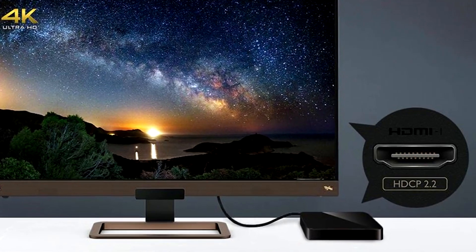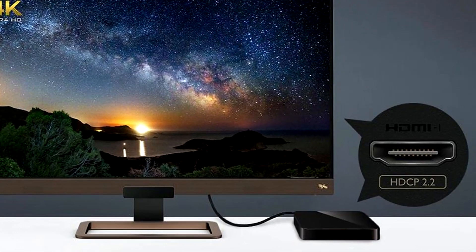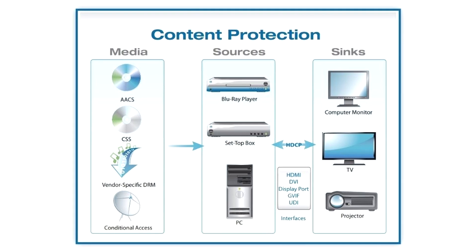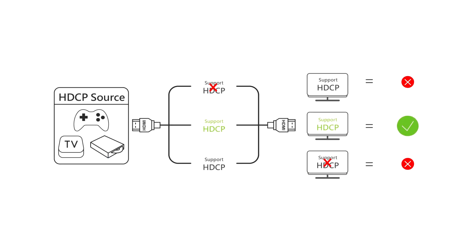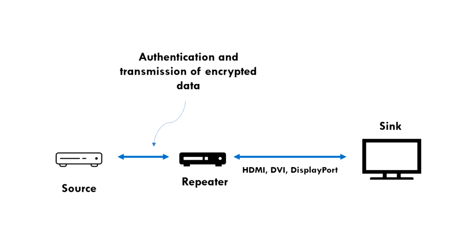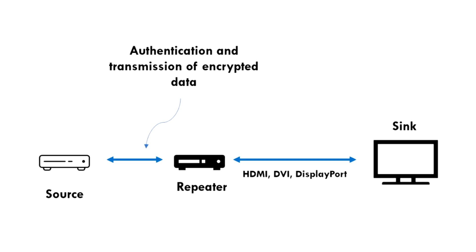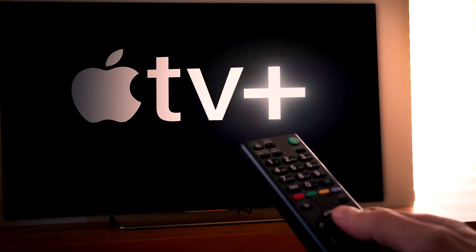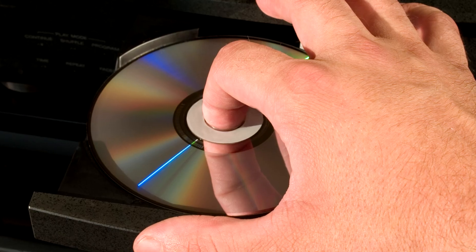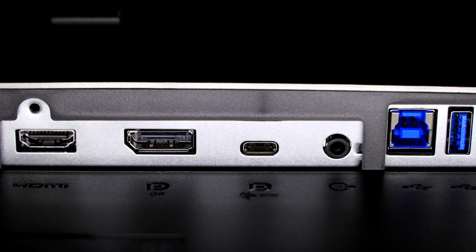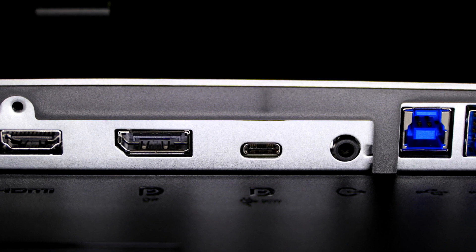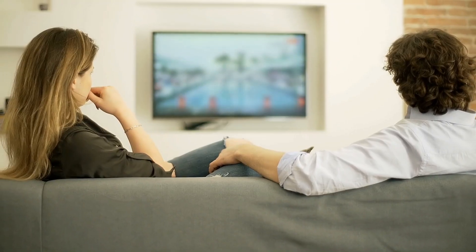Secondly, we need to understand what HDCP is. High bandwidth digital content protection was designed by Intel to prevent digital information — audio or video — from being copied as it travels from the source of the content, be that your Apple TV or Android TV box, Blu-ray player or games console, through DisplayPorts, digital visual interfaces, or HDMI cables, to your screen or monitor.